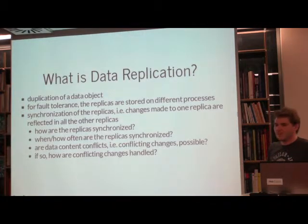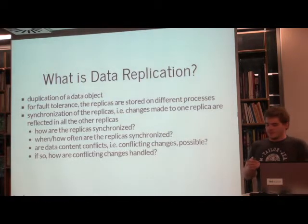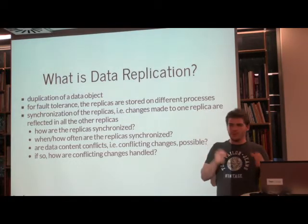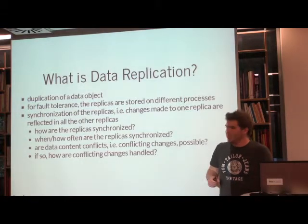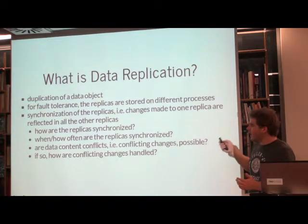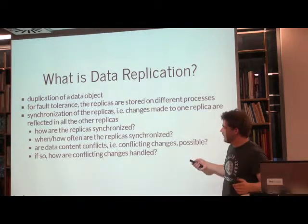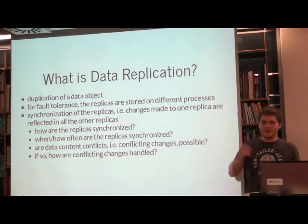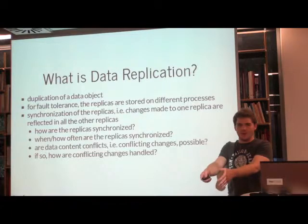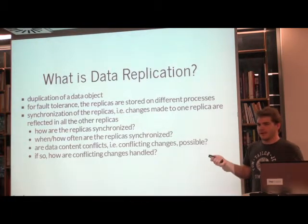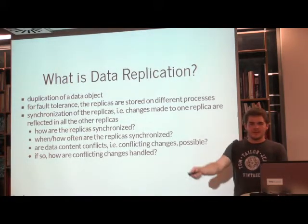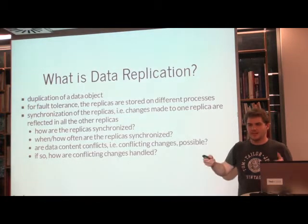What can we do with a distributed system? We can use it for data replication storage — instead of storing data on one process where failure means all data is gone, we store it on several processes in different data centers and cities. The problem then is how to synchronize the data. If we just write to one data center, when do we tell the others there's new data? Periodic sync causes conflict problems, and writing to every data center is also inefficient. That's where the quorum-based approach comes in.